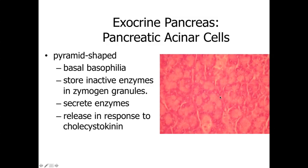The pancreatic acinar cells are going to be the cells involved with making the digestive enzymes. They're going to be relatively pyramid-shaped, with basal basophilia, round nuclei, and a slightly basophilic appearance to the cytoplasm. Lots and lots of cytoplasmic granules — referred to as zymogen granules within the pancreas — are going to store the enzyme in an inactive state. When materials are in the duodenum, enteroendocrine cells within the small intestine are going to release cholecystokinin, which stimulates these pancreatic acinar cells to release their digestive enzymes to assist with digesting materials within the small intestine.